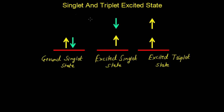To understand singlet and triplet excited states in photochemistry is important. In this schematic diagram you can see the ground singlet state, excited singlet state, and excited triplet state.